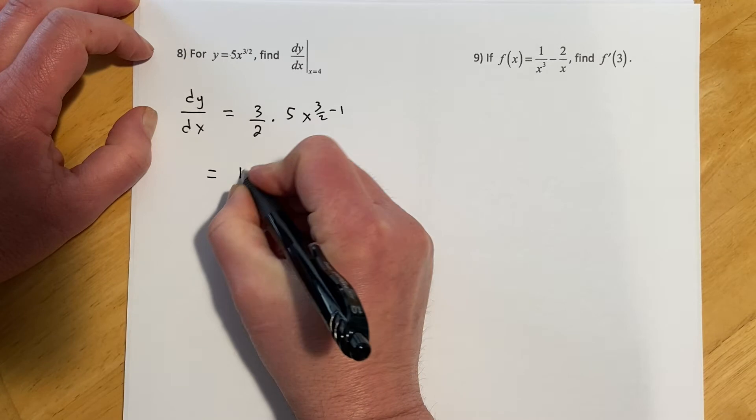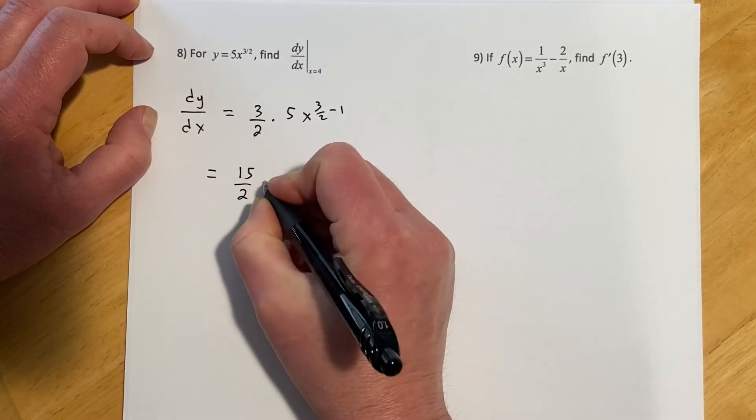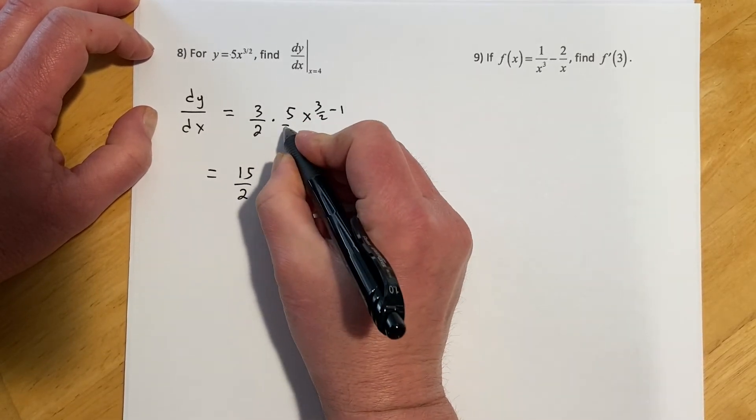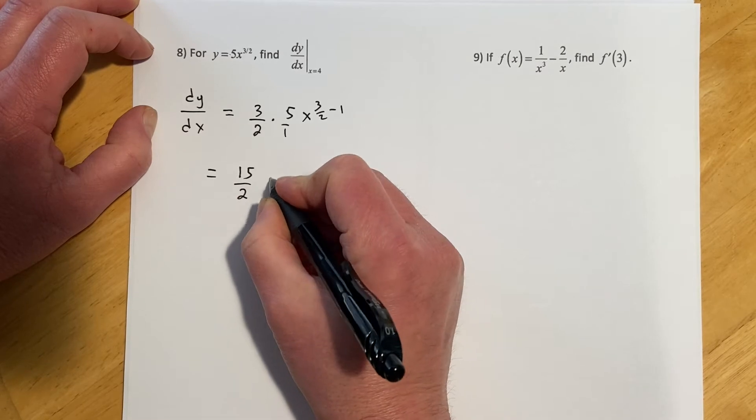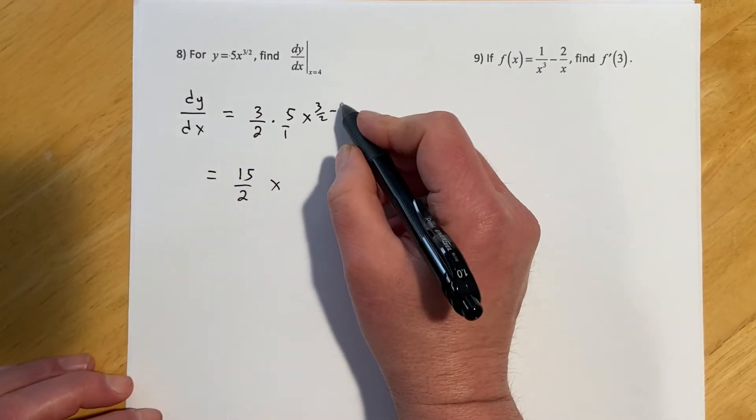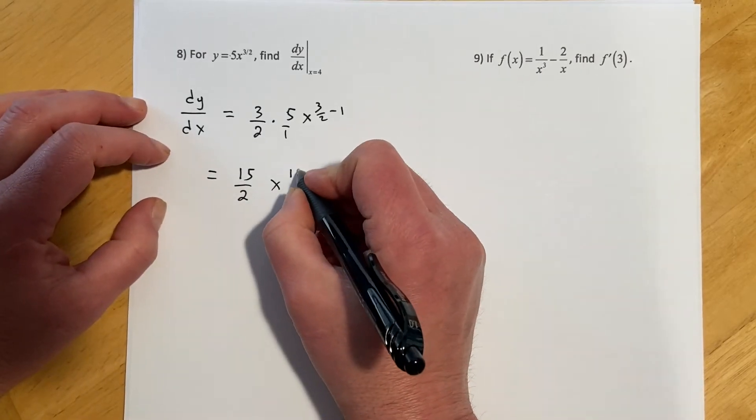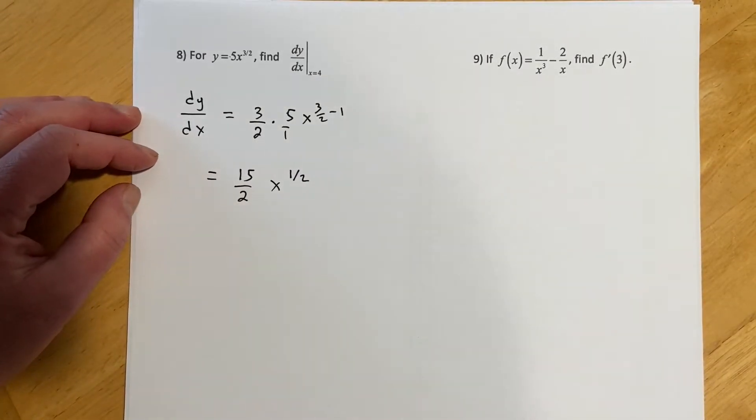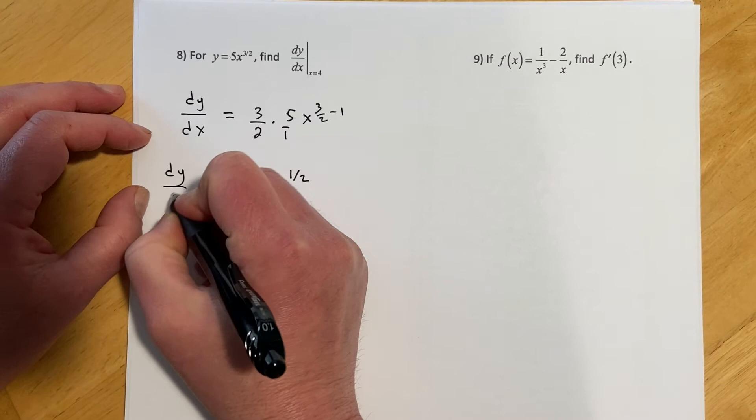So cleaning that up a little bit, we're going to get 15 halves. It's 3 times 5 for 15, and then 3 halves minus 1 would leave me 1 half, right, because that would be like 2 halves. So 15 halves x to the 1 half, and that would be my derivative.